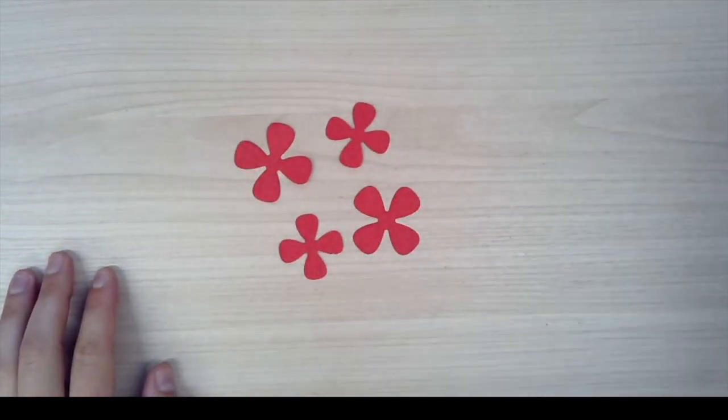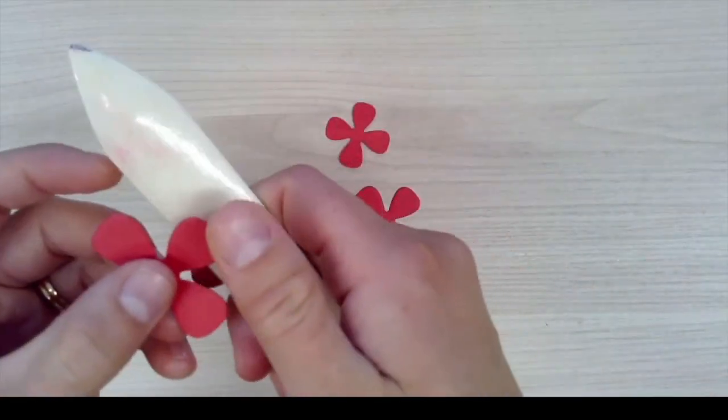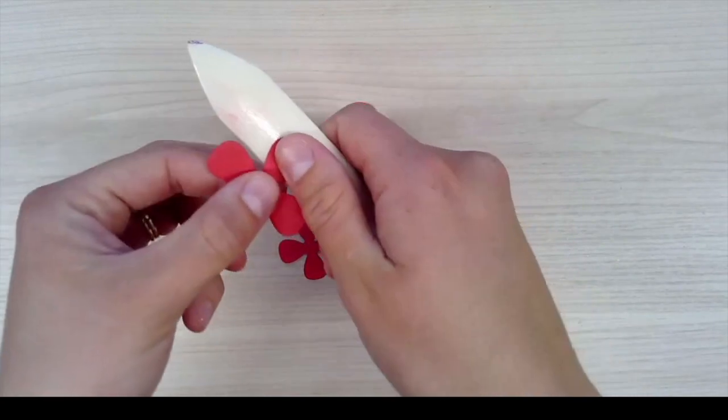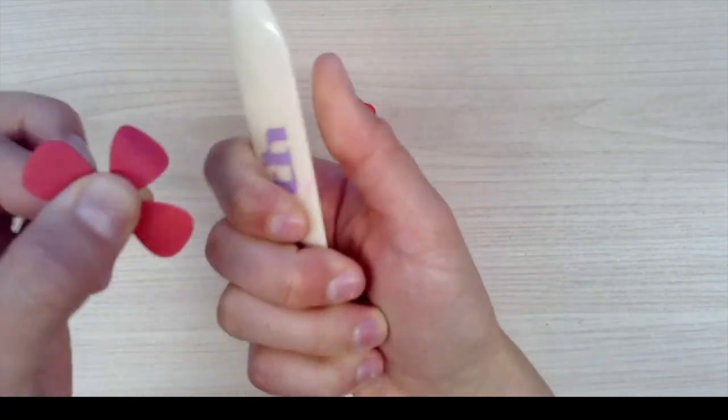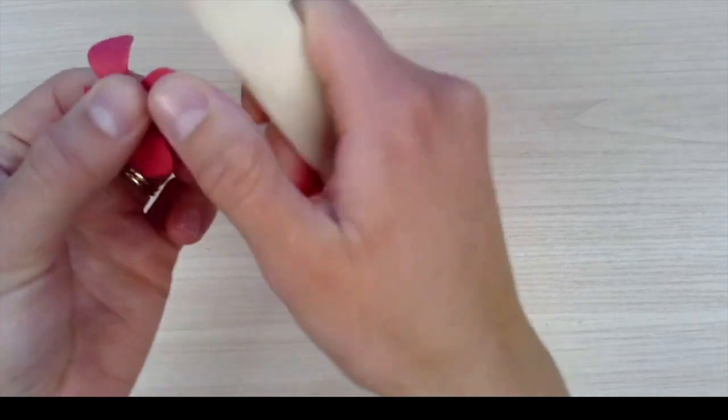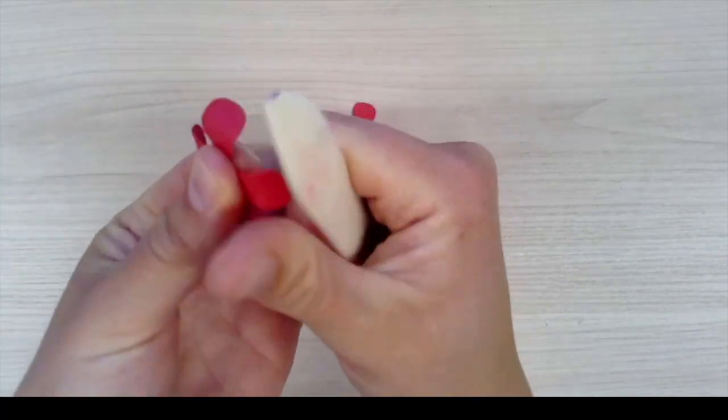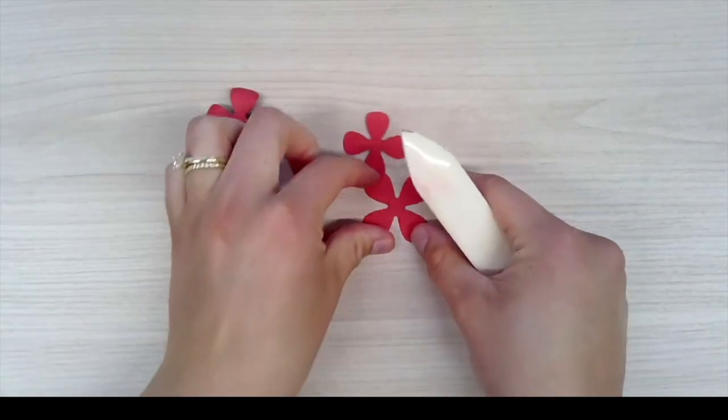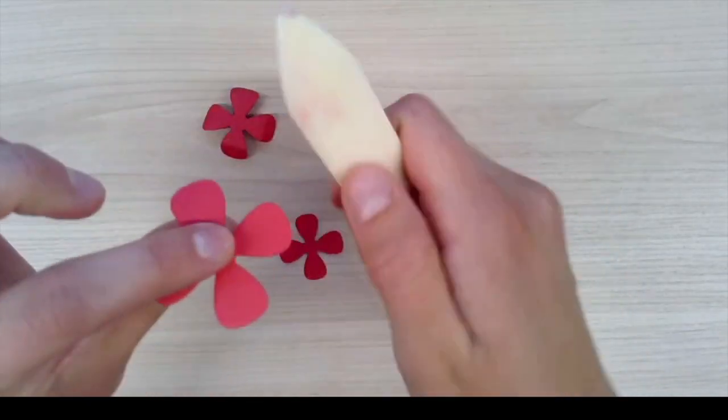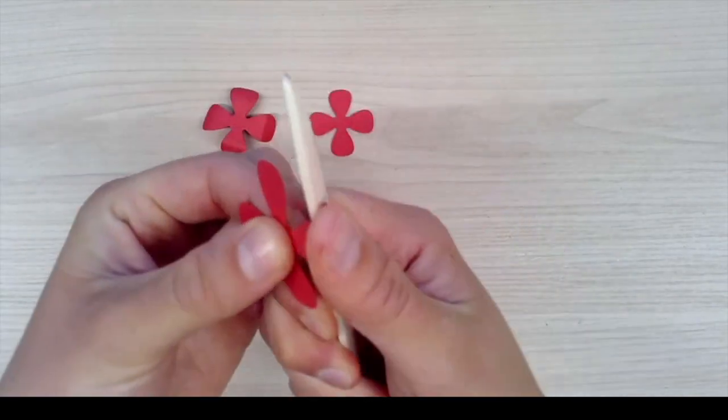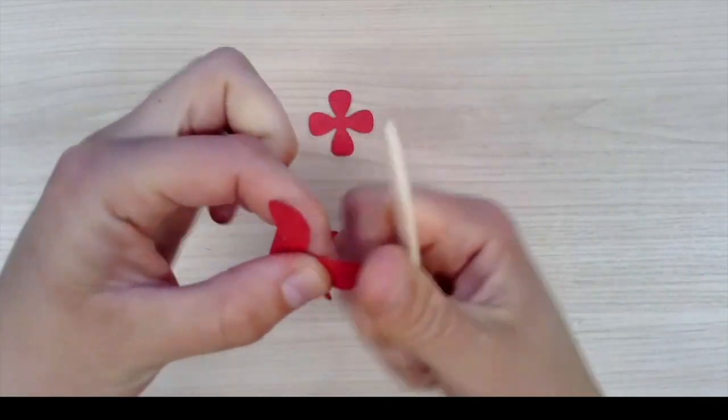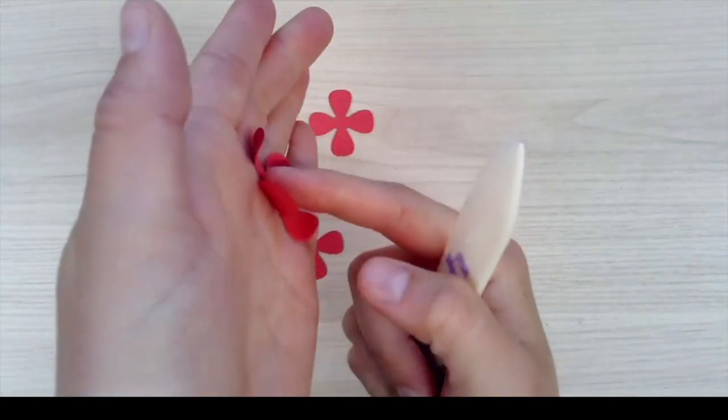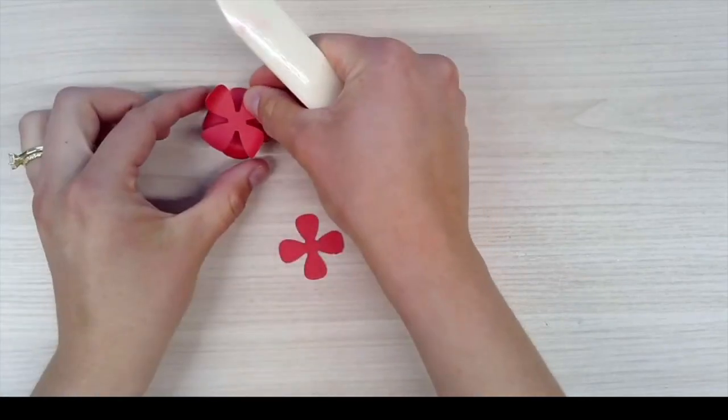I suggest using a bone folder. You'll have two large and then two small. For the first large, you're going to take your bone folder and bend the flower petals down so that it looks like that. Then the next large flower petal you're going to go up, so you could go the same direction and then flip it this way so all the petals are facing up.